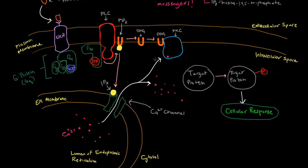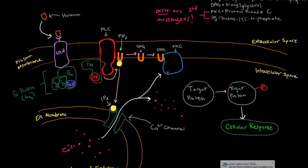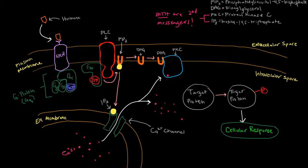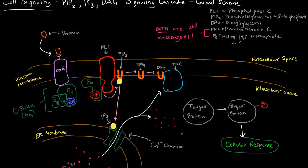So diacylglycerol goes over to PKC, which is protein kinase C. Protein kinase C is a protein kinase, just like we've talked about protein kinase A before. It adds phosphates to target proteins.